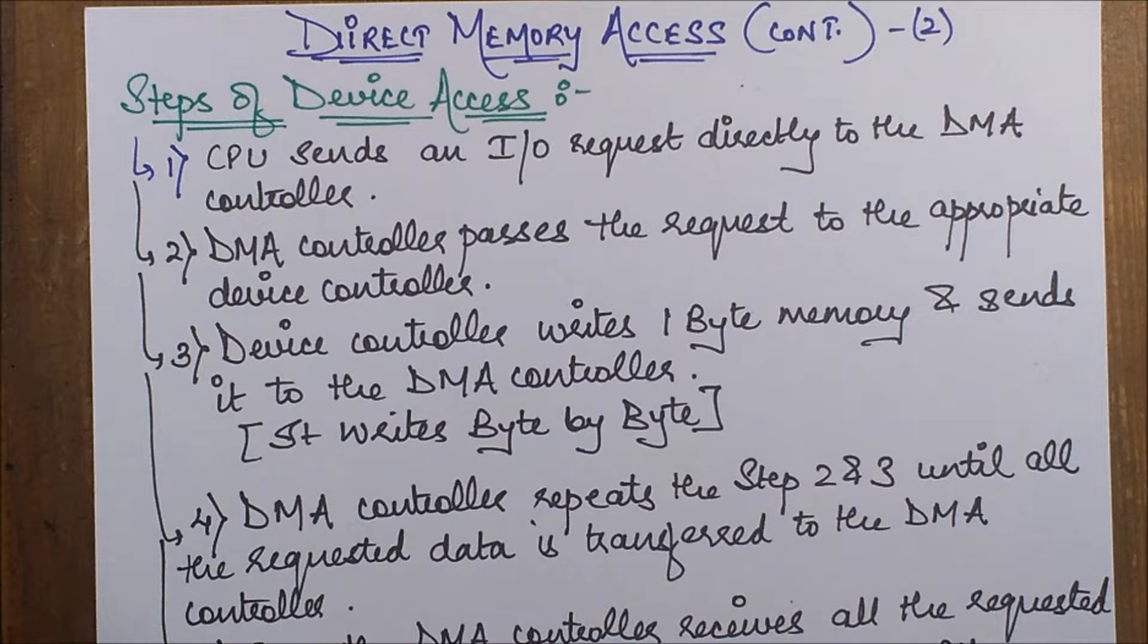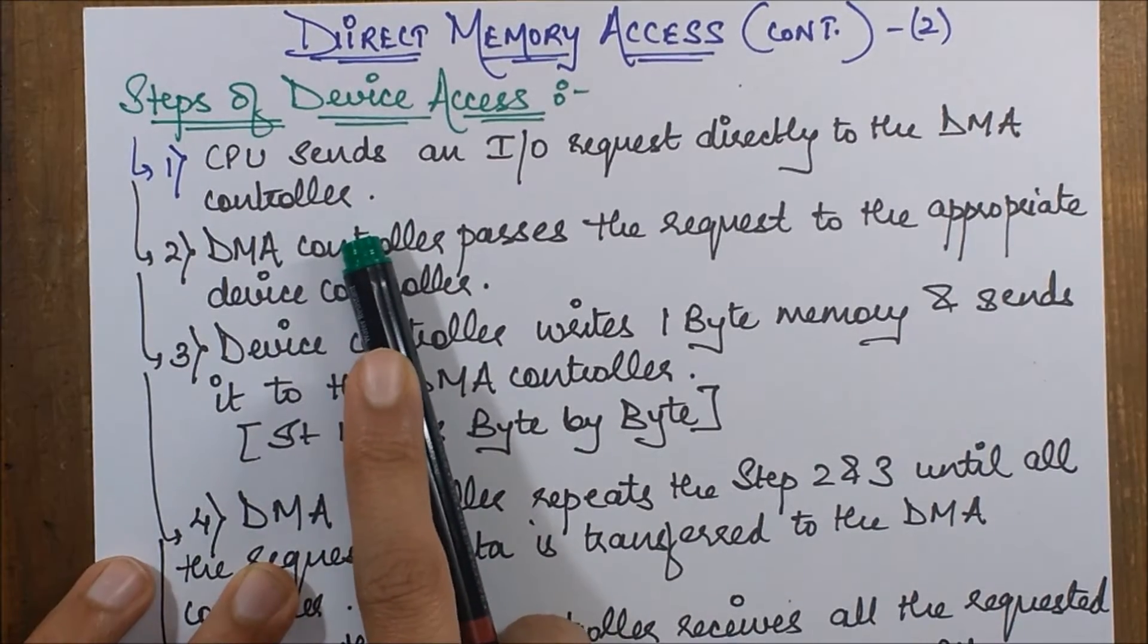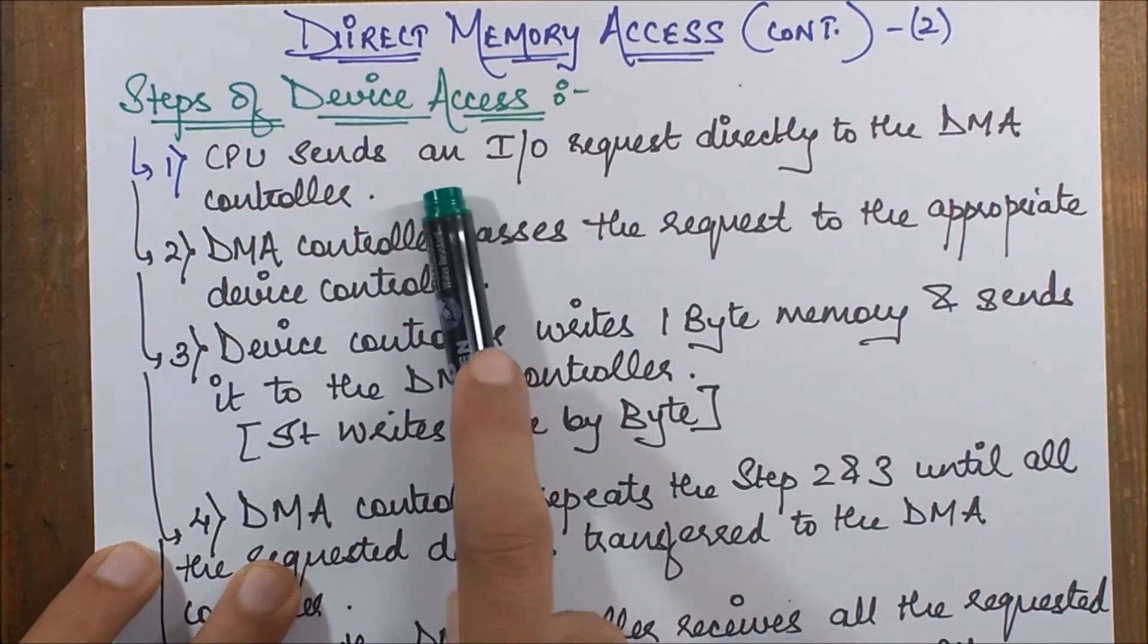Now we are going to move into the details by knowing how this DMA technique actually works. Let's see the steps. First step: CPU sends an I/O request directly to the DMA controller.